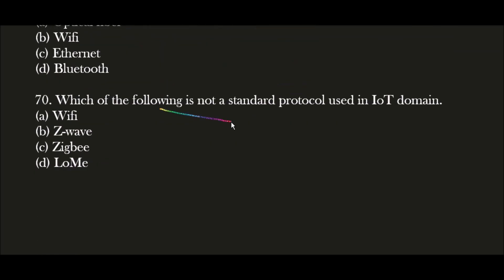Next question: Which of the following is not a standard protocol used in the IoT domain? The correct answer is option A and B — Wi-Fi and LoRa (Lomi). Wi-Fi and LoRa are not standard IoT domain protocols, while Thread and Zigbee are very famous and standard protocols used in the IoT domain. So the correct answer is option A and option D.